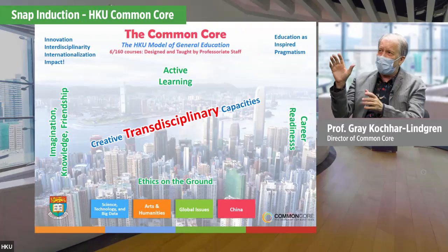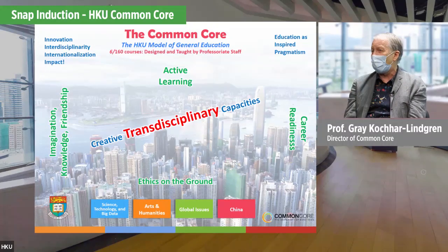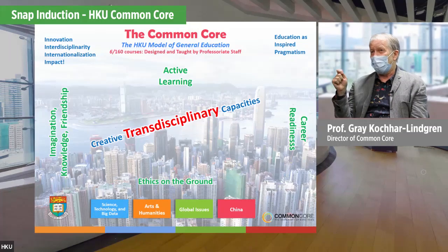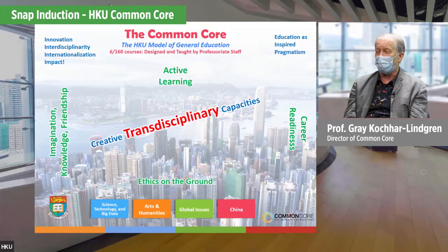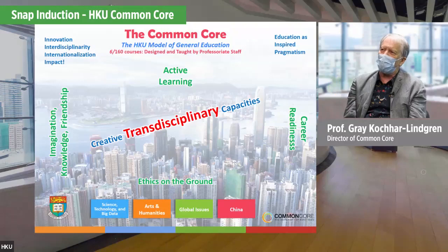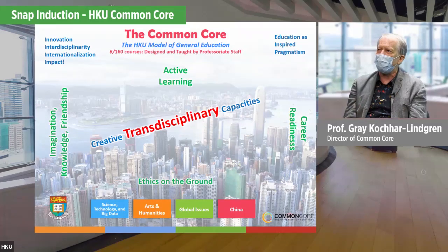I'll give you a brief overview of the whole Common Core, and then more importantly we'll hear student voices. All of you will be required to take the Common Core — most six courses, some four, depending on your program. In my opinion, having worked in many programs around the world, this is the very best kind of general education program on the planet. The central goal is creative transdisciplinary capacities — how to make connections between academic disciplines and beyond.